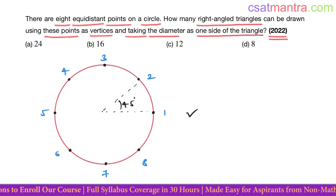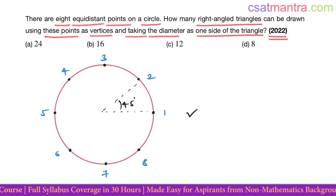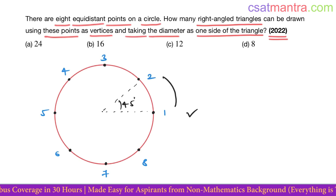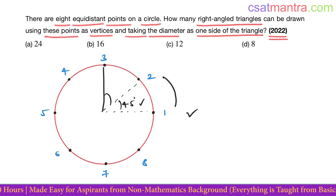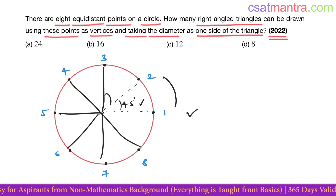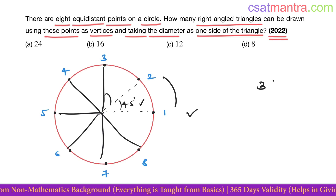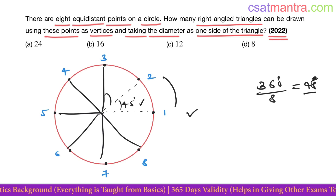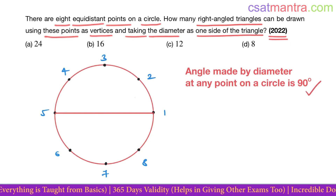There are eight equidistant points on the circle. The angle between two consecutive points is 45 degrees — all 45 degrees, since 360 degrees divided by eight points equals 45 degrees. Now remember this important result.